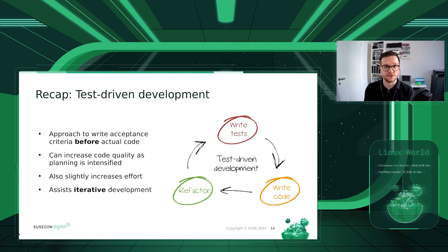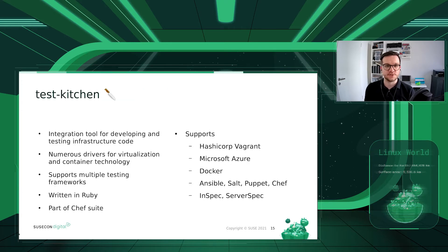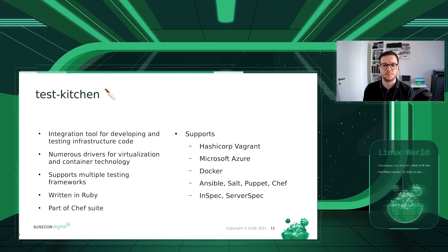A tool that can assist with this kind of development approach is Test Kitchen. Test Kitchen is a utility that's part of the Chef suite, written in Ruby, and is an integration tool for developing and testing infrastructure code — in this example we focus on SaltStack code. There are numerous drivers for virtualization and container technology; the default is often using HashiCorp Vagrant in combination with a hypervisor like KVM or VirtualBox to spin up VMs on your local development machine.